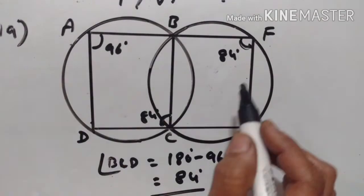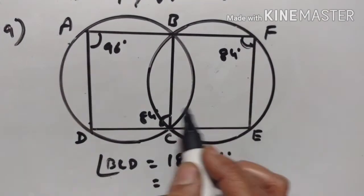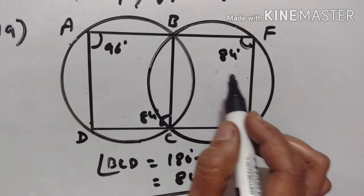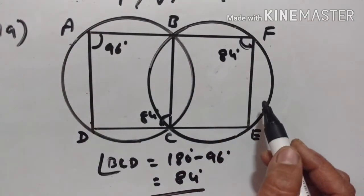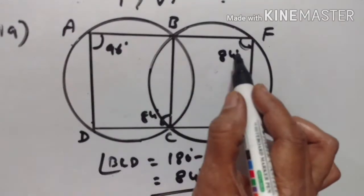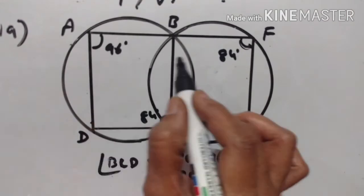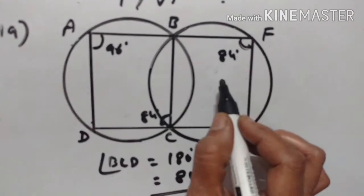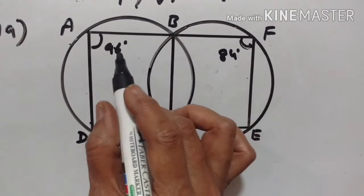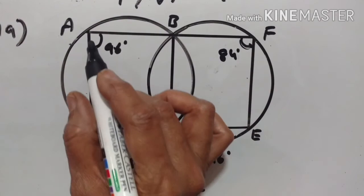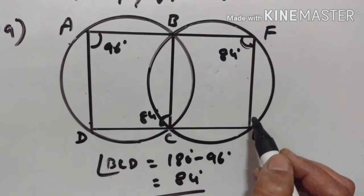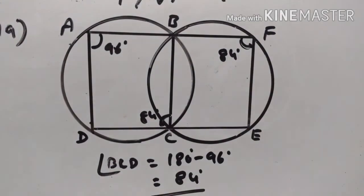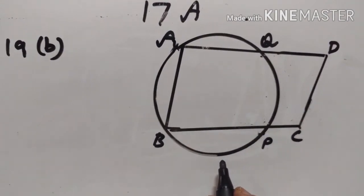AD and FE are two lines cut by transversal AF. These two are allied angles: 96 plus 84 equals 180. Allied angles are supplementary, therefore AD is parallel to FE.